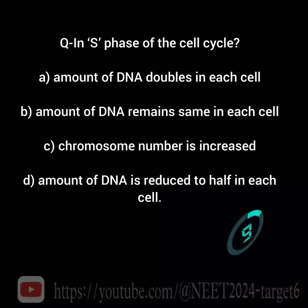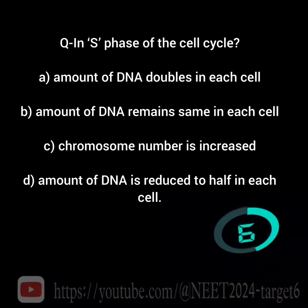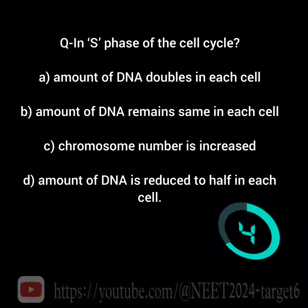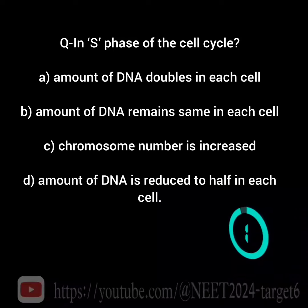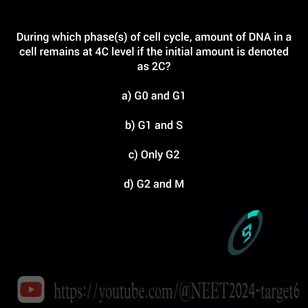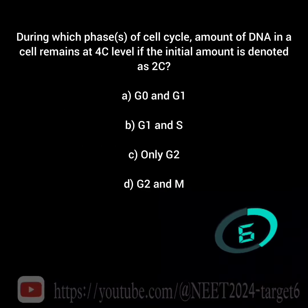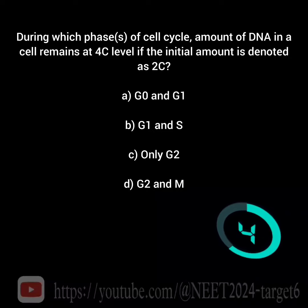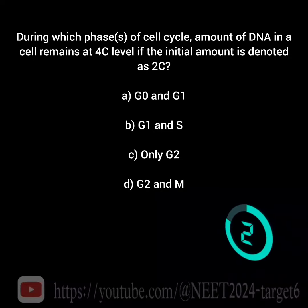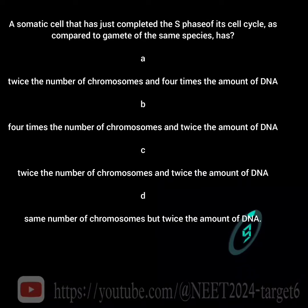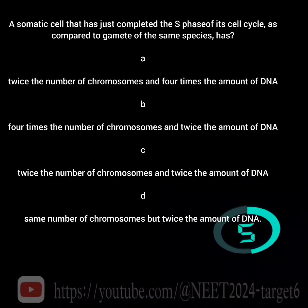In S phase of the cell cycle: during which phase or phases of the cell cycle does the amount of DNA in a cell remain at the 4C level, if the initial amount is denoted as 2C?